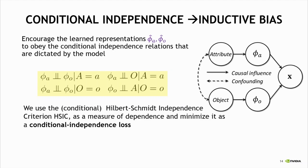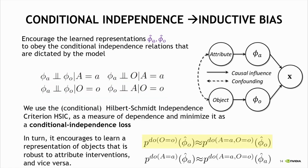And for that, we use the Hilbert-Schmidt independence criterion, which is a differentiable measure of dependence between vectors and minimize it as a conditional independence loss term. We also show that this loss term encourages learning a representation of object that is robust to attribute interventions and vice versa.